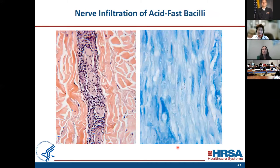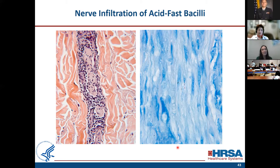The nerve infiltration of acid-fast bacilli can be very hard to see. You sometimes have to go to more than 40x magnification, and very often I'll have to use oil immersion on these cases. If you have a strong suspicion, take a couple of extra minutes to look — it makes a big difference, because that's where the money is. If you see perineural inflammation with granulomas, that's where it's going to be.